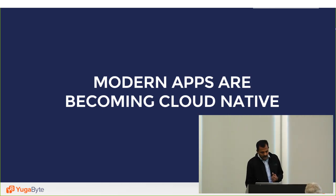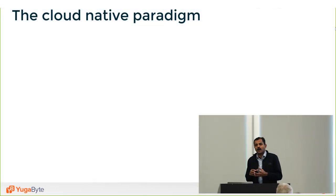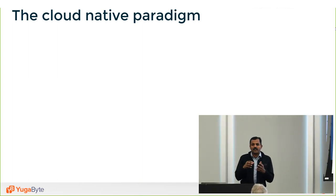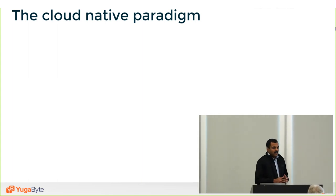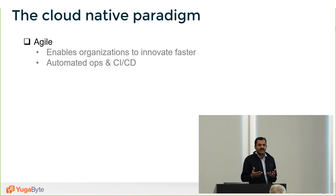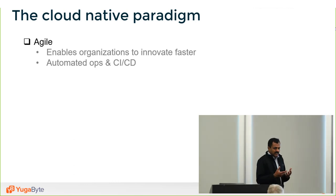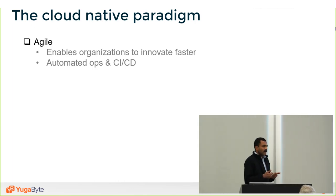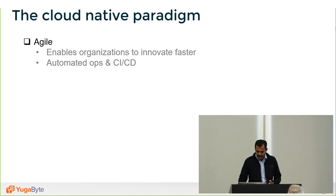So what is this cloud-native paradigm? The key traits come down to a few aspects. Enterprises want to ship products faster and innovate rapidly, so agility is of utmost importance. The technology stack needs to be extremely developer-friendly and operations-friendly. Everything must be zero-touch, from operations to your continuous integration and delivery mechanisms.